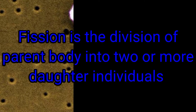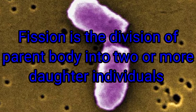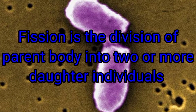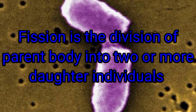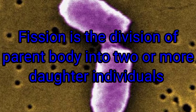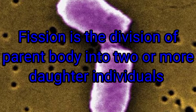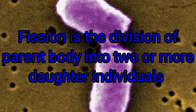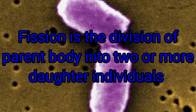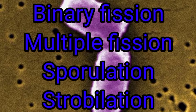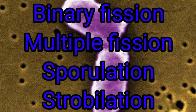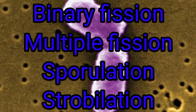Fission is the division of the parent body into two or more identical daughter individuals. There are four types of fission: binary fission, multiple fission, sporulation, and strobulation.